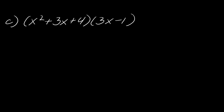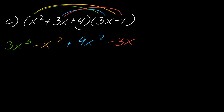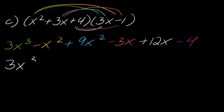Now I've got a slightly more complicated one: x squared plus 3x plus 4, times 3x minus 1. Pause and give it a try. Okay — x squared times 3x is 3x cubed, x squared times negative 1 is minus x squared. Then 3x times 3x is 9x squared, and 3x times negative 1 is minus 3x. Then 4 times 3x is 12x, and 4 times negative 1 is negative 4. Collecting like terms: 3x cubed plus 8x squared plus 9x minus 4.